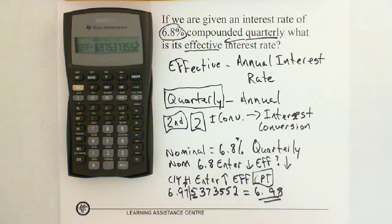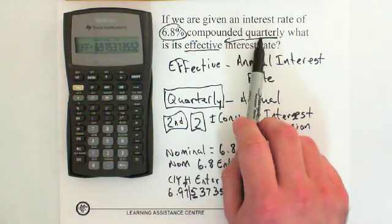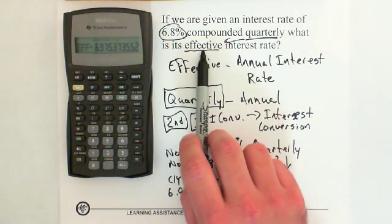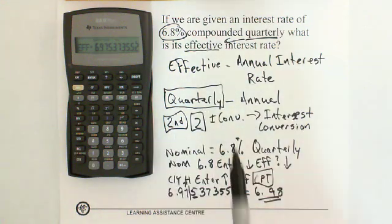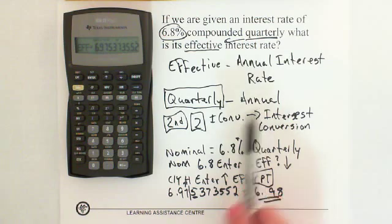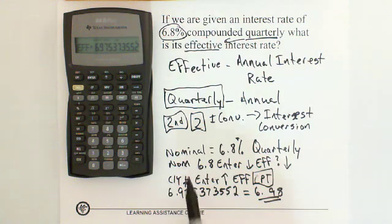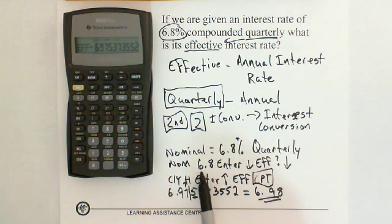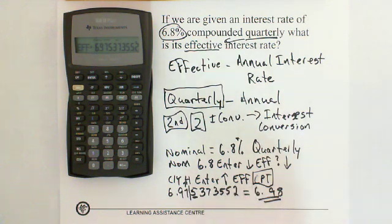Let's quickly review. In the question we were given 6.8% quarterly, and we wanted to know the effective interest rate. Effective means annual, so we changed it from quarterly to annual. We go Second, iConversion, and start with NOM — that was the 6.8 — Enter. We hit the down arrow twice to go to CY, typed in 4, Enter, up arrow back to EFF, and pushed Compute.